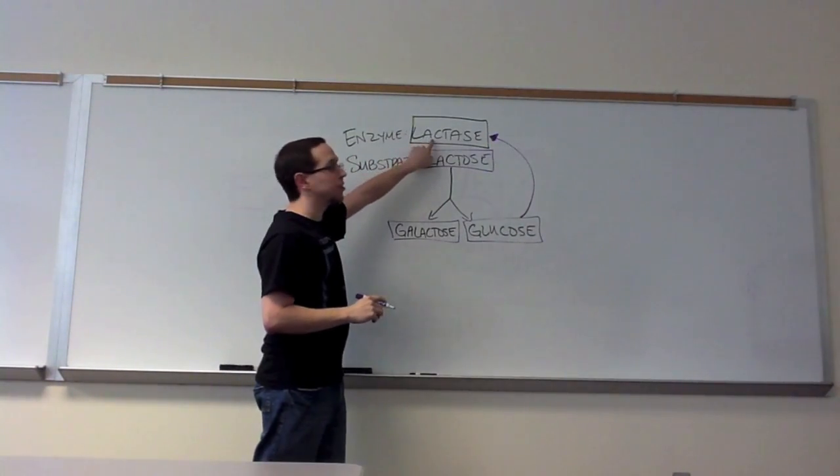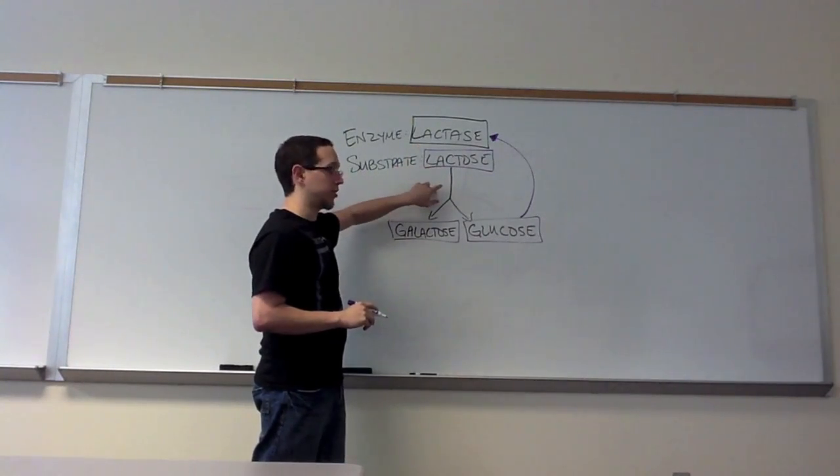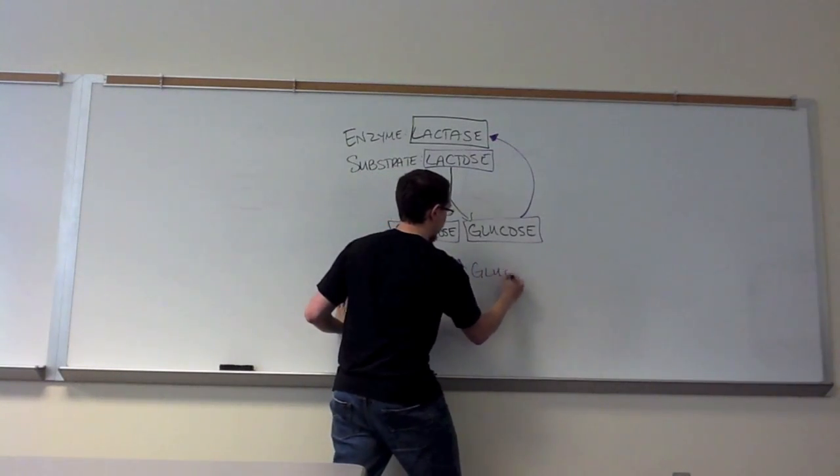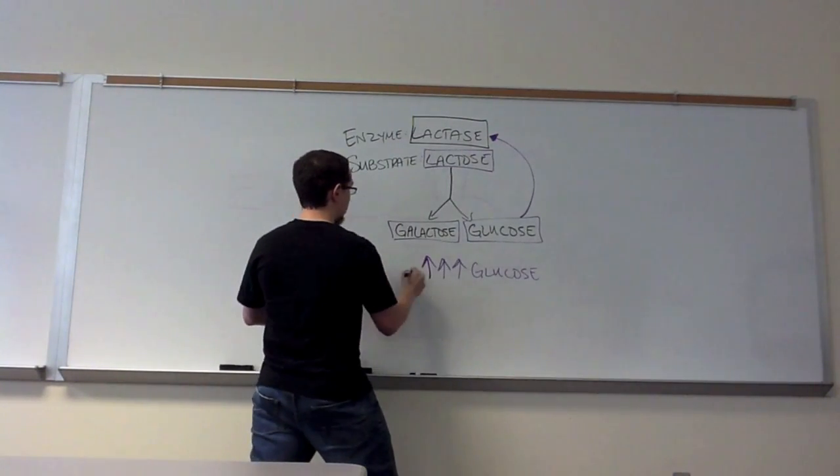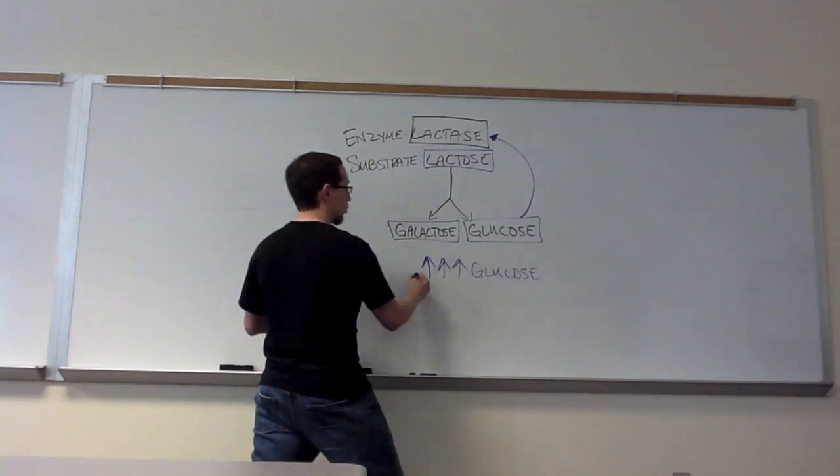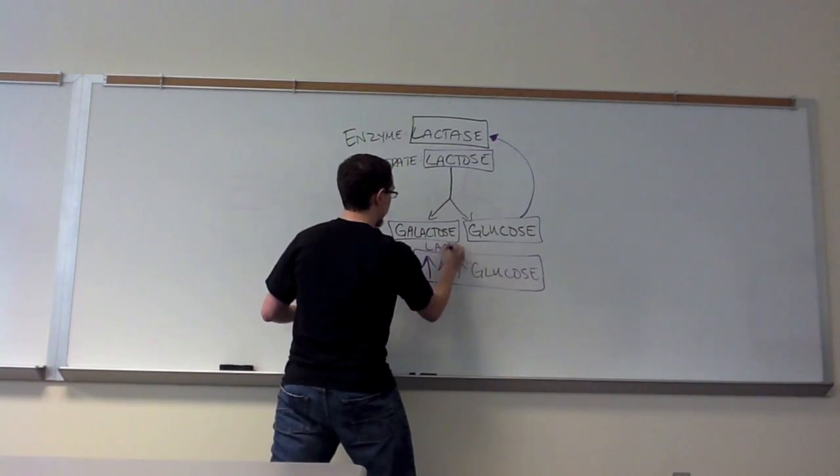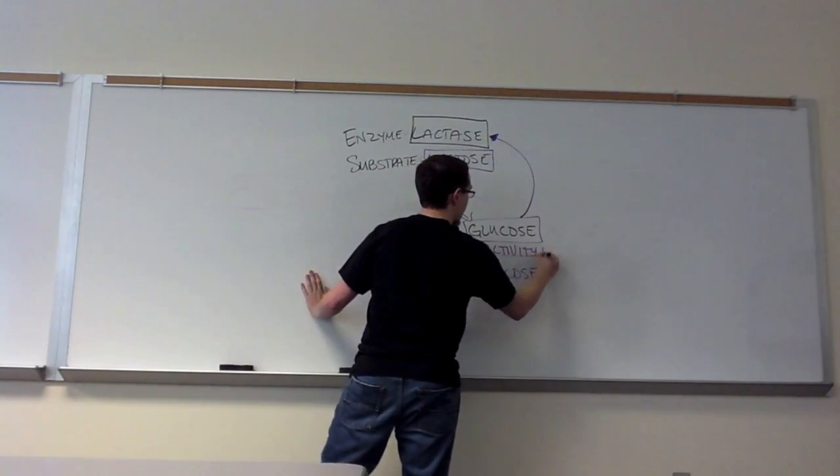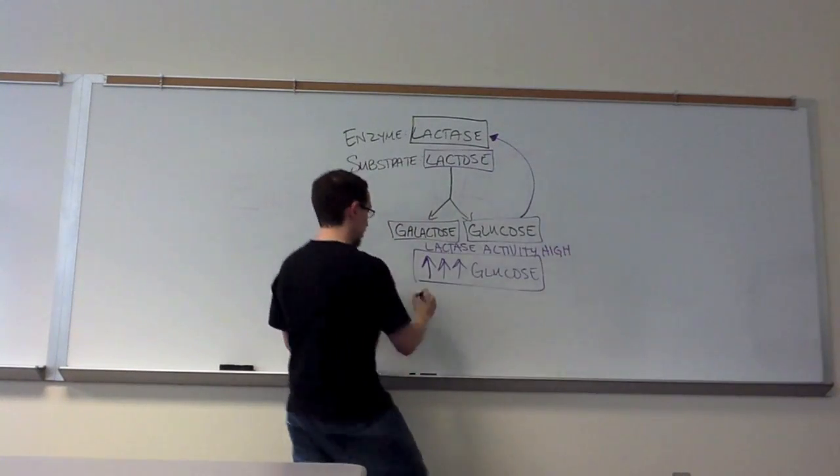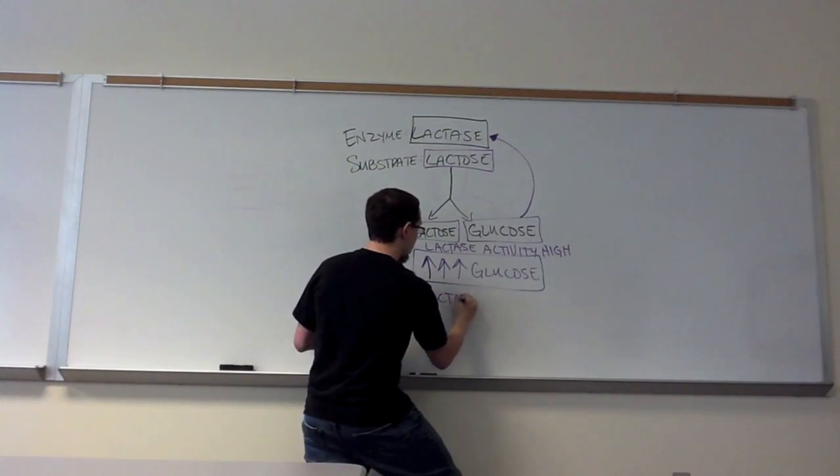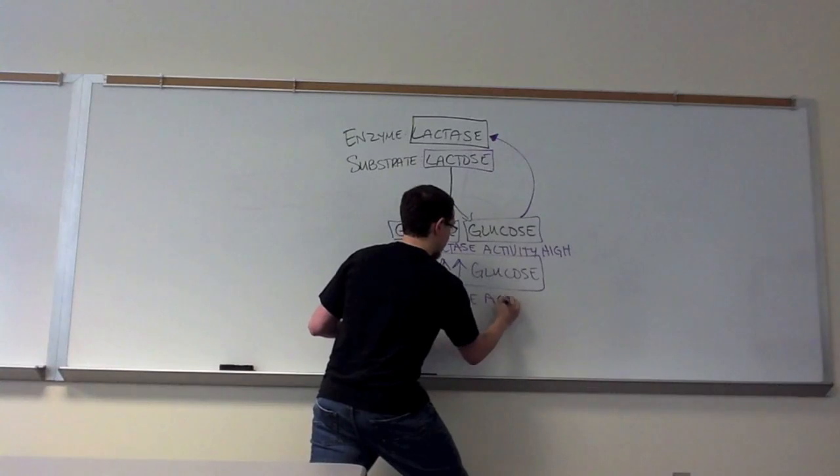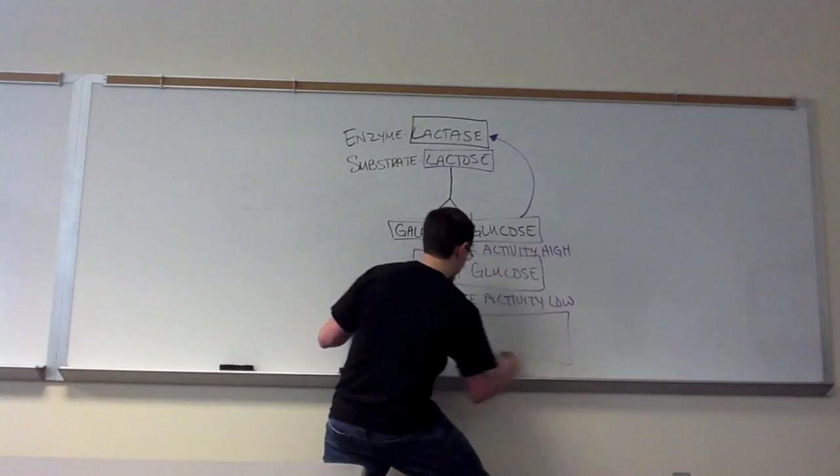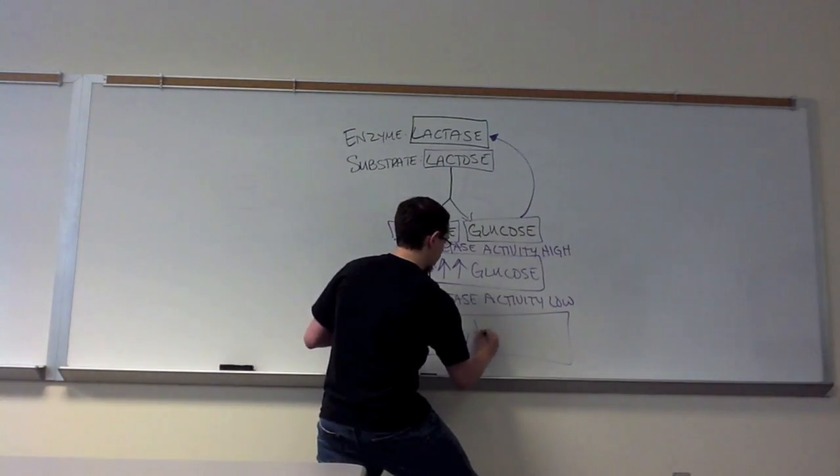So we are measuring glucose to directly correlate it to how well lactase is working. In other words, if lactase is doing an awesome job and it's speeding up this reaction, we expect to see really high levels of glucose. So if lactase is working very well, lactase activity is high, and we expect to see high levels of glucose. In the event that lactase activity would be low, then we would expect to see much lower levels of glucose.